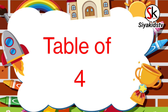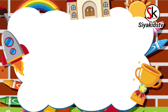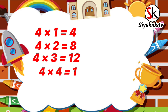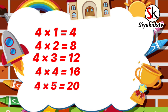Table of 4. 4 times 1 is 4, 4 times 2 is 8, 4 times 3 is 12, 4 times 4 is 16, 4 times 5 is 20, 4 times 6 is 24.